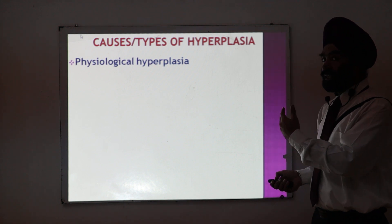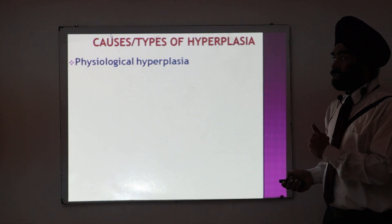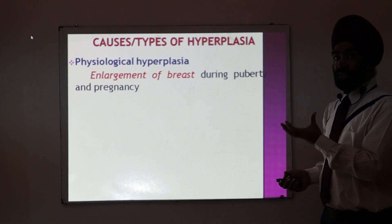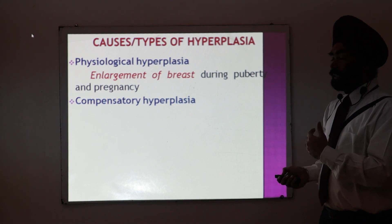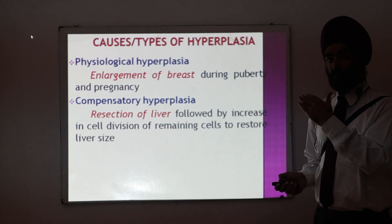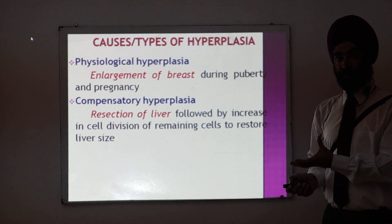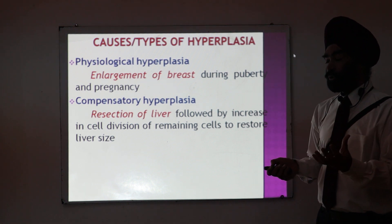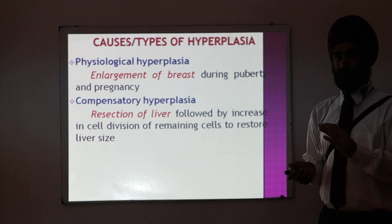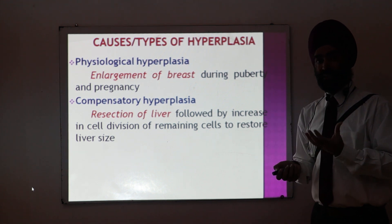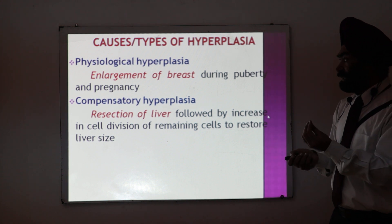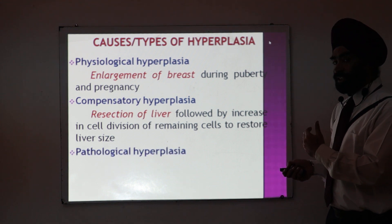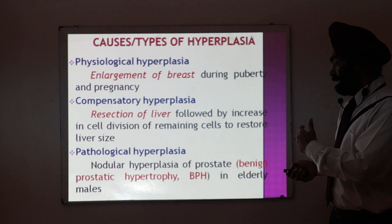Like hypertrophy, I will discuss two types. Physiological hyperplasia includes enlargement of the breast during puberty or pregnancy due to increased hormones. Compensatory hyperplasia — a typical example is if you remove part of the liver, the remaining liver cells start proliferating and increasing in number so the liver size increases back. The same is the case with the kidney — if some cells are removed, the remaining cells start regenerating and multiplying.